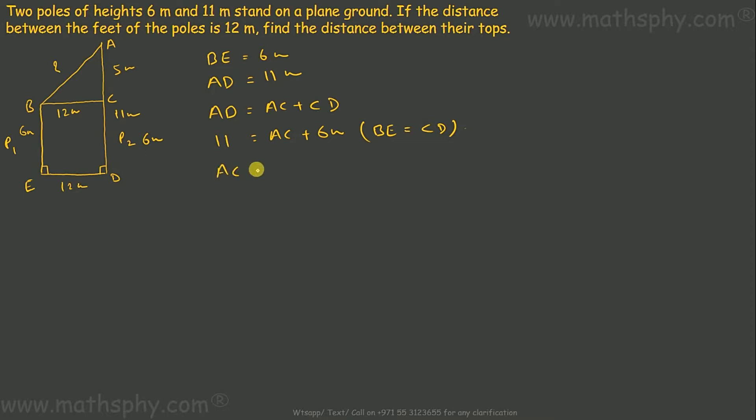So AC would be 5 meters. I'll write here BC is equal to ED. If ED is 12, BC will also be 12. So I have this 12, this 5, and I need to know this.